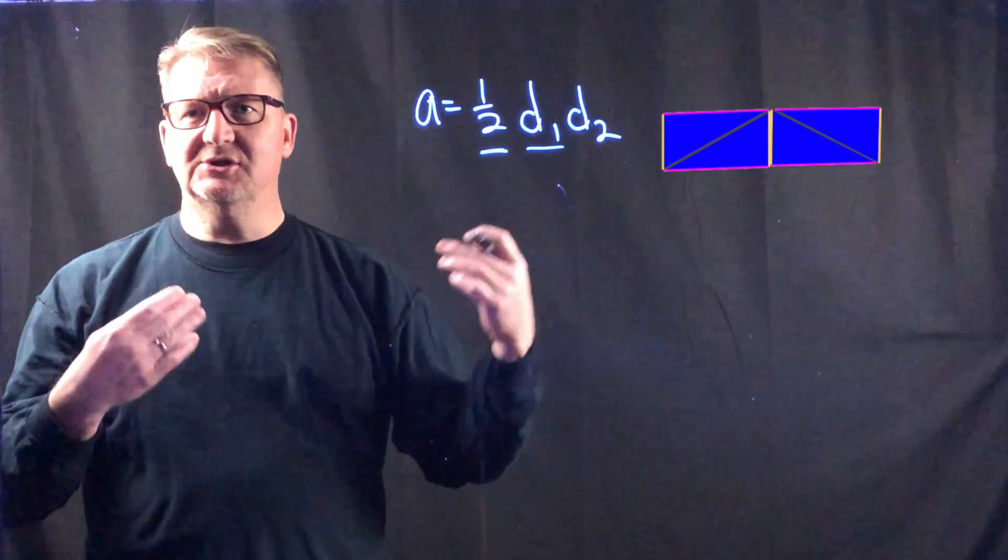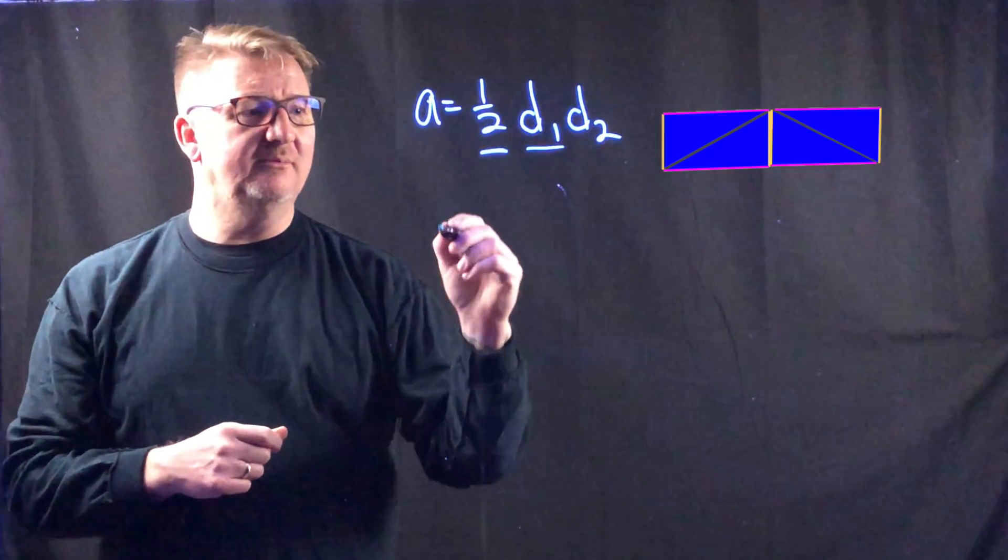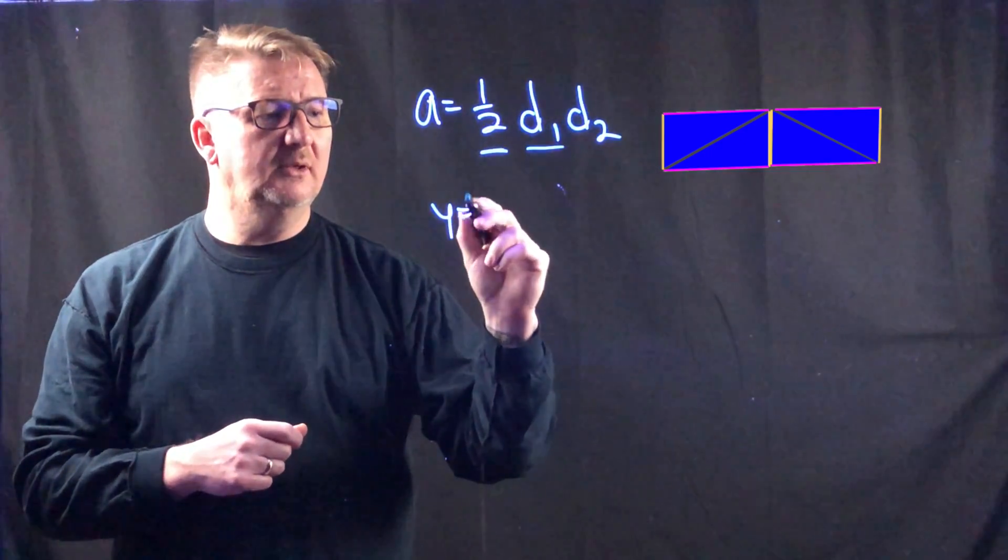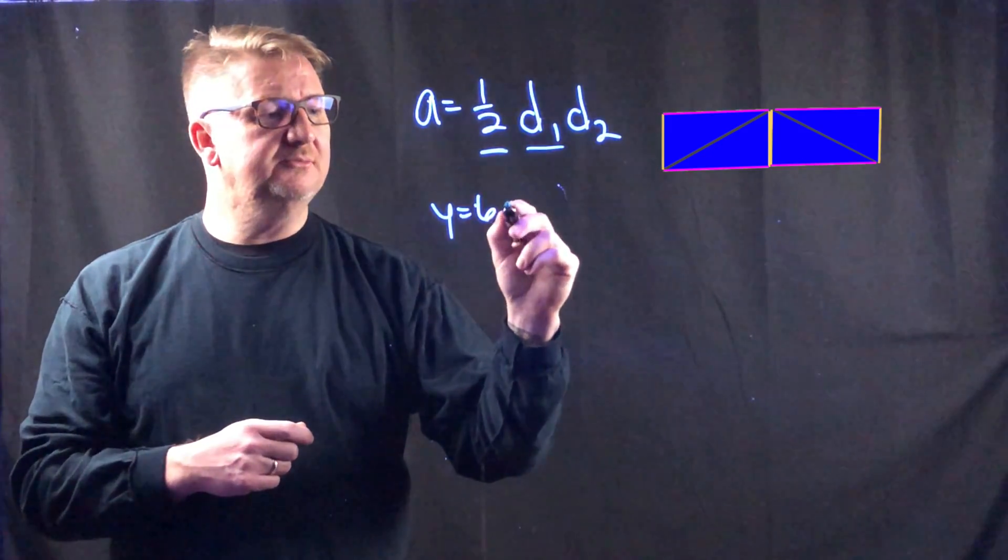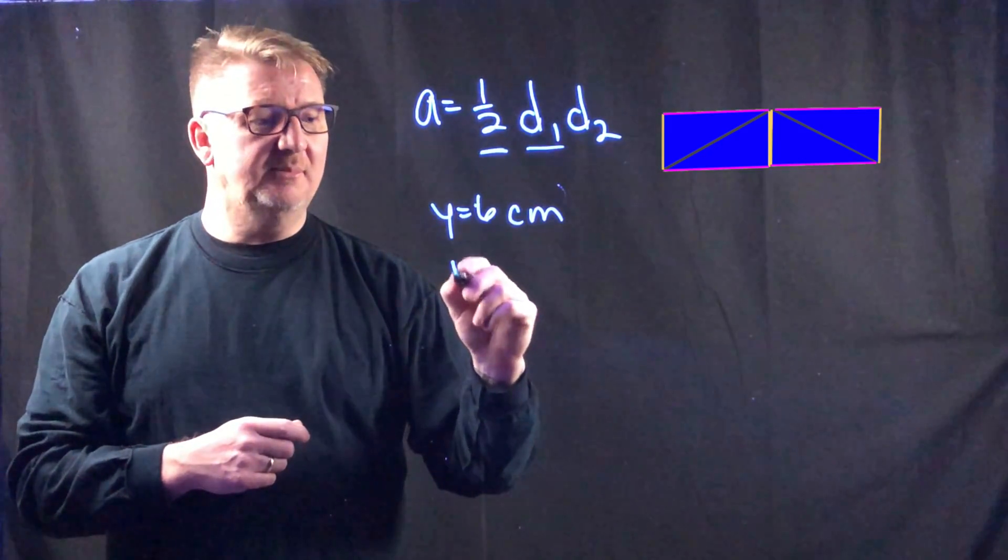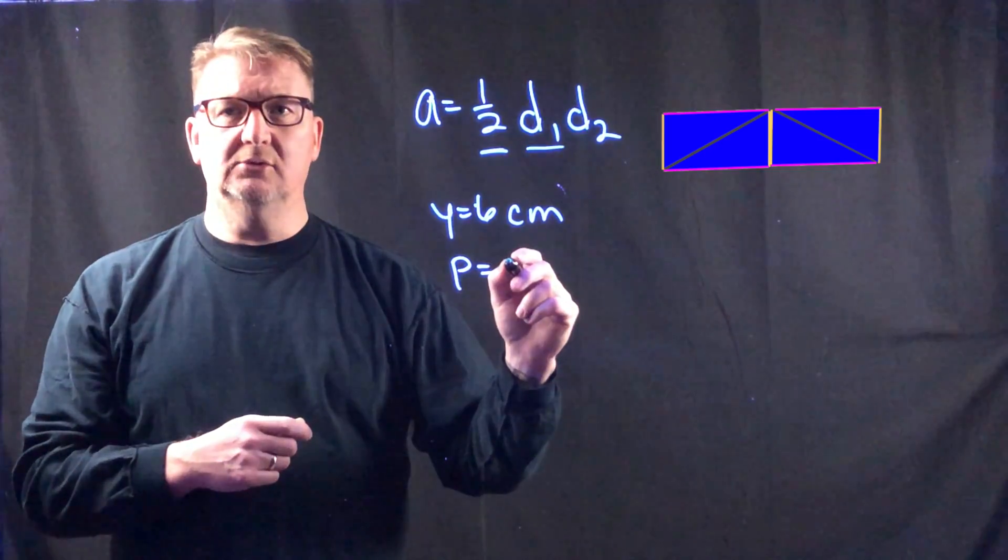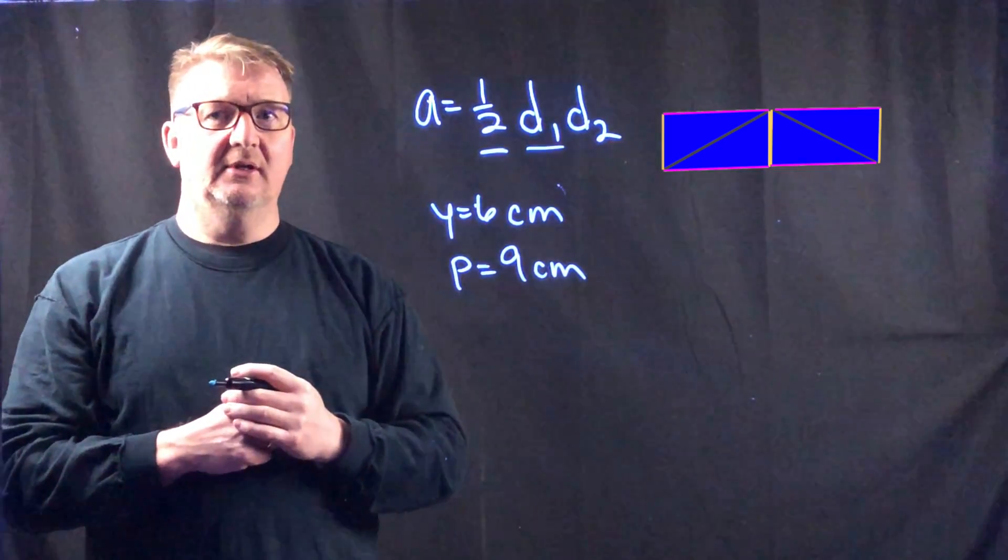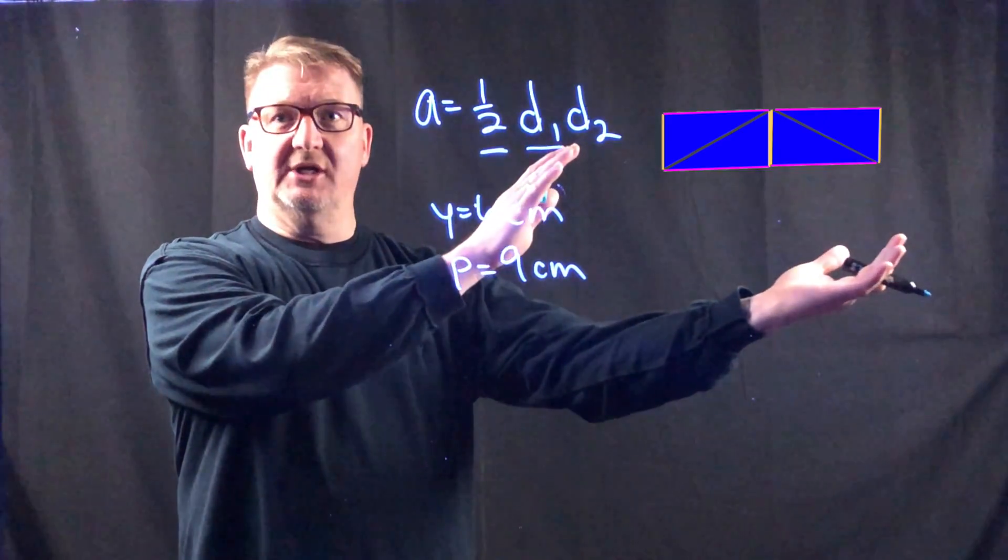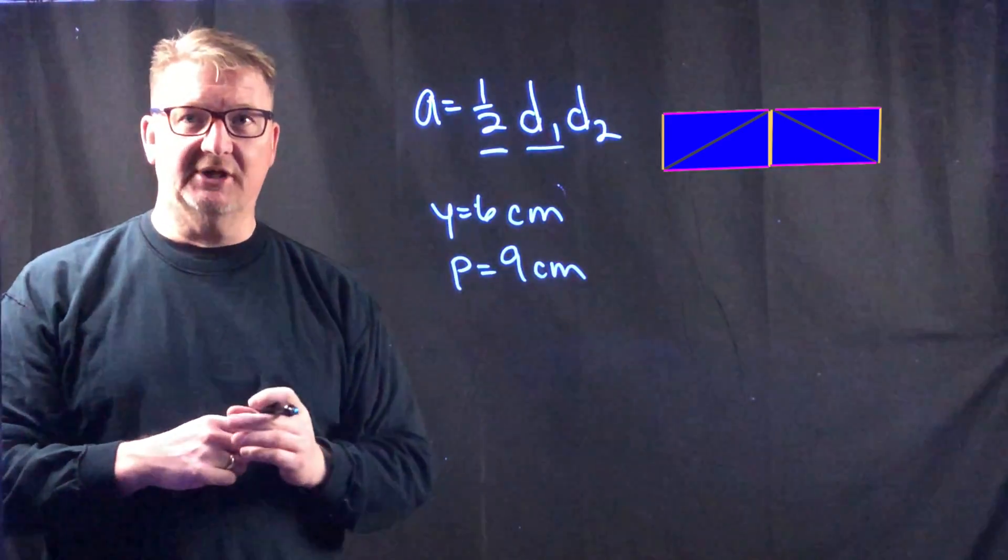So in this particular shape, let's just assume for a second that the yellow line equals 6 centimeters and that the pink line equals 9 centimeters. Now that's back when it was in the rhombus shape. Now that it's in this rectangle shape, it's different.